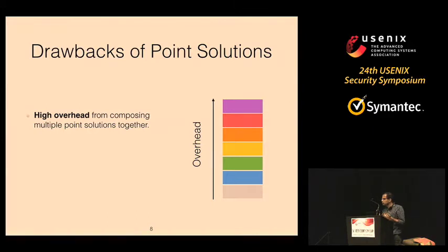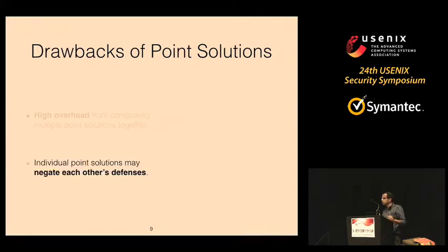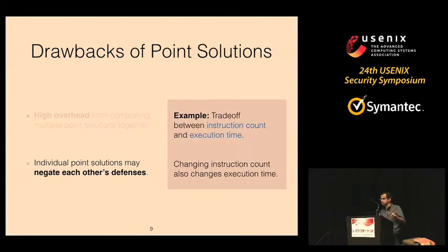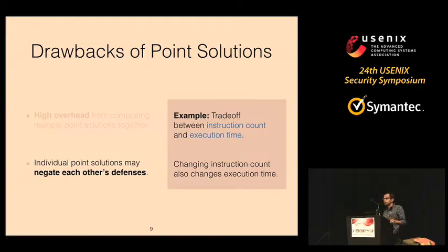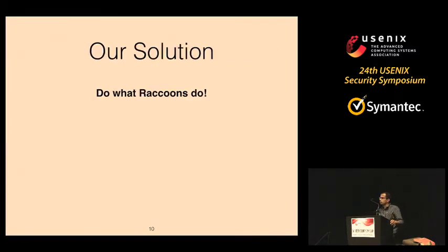The not-so-obvious disadvantage of using point solutions is that sometimes you cannot compose multiple solutions together. For instance, if you fix the instruction count by adding NOP instructions and also want to fix execution delay to a specific value, you may not be able to achieve both simultaneously, because adding NOP instructions also changes execution delay. To counter these limitations and strengthen these defenses, we present our solution called Raccoon.